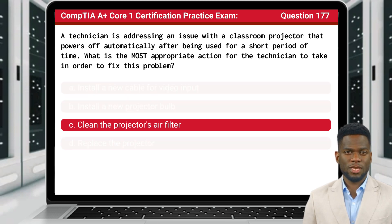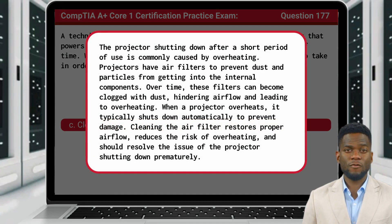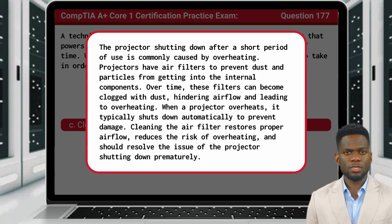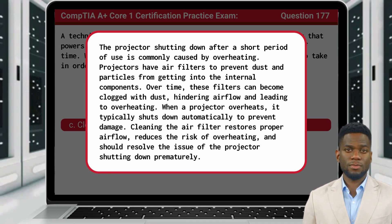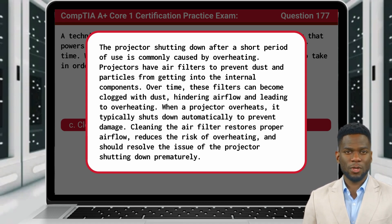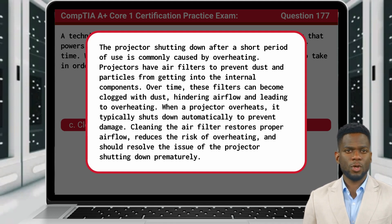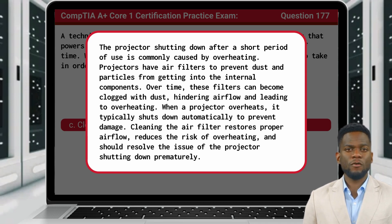The answer is C: Clean the projector's air filter. The projector shutting down after a short period of use is commonly caused by overheating. Projectors have air filters to prevent dust and particles from getting into the internal components. Over time, these filters can become clogged with dust, hindering airflow and leading to overheating. When a projector overheats, it typically shuts down automatically to prevent damage. Cleaning the air filter restores proper airflow, reduces the risk of overheating, and should resolve the issue of the projector shutting down prematurely.